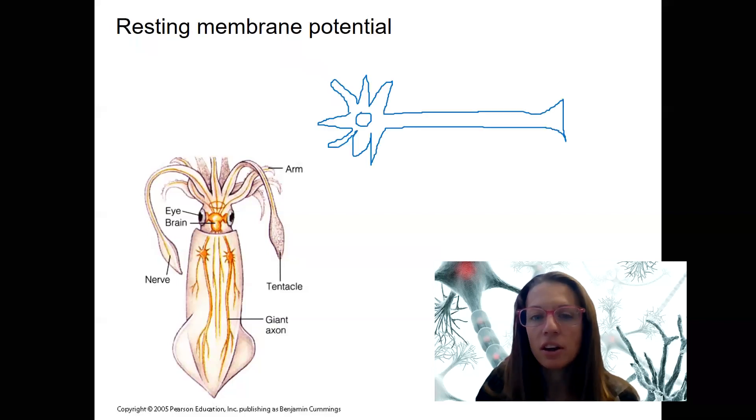So if we draw a neuron here, what researchers did was impale this large axon with an electrode, and then have a reference electrode, which is outside of the cell. So this would be in the ICF versus the ECF.